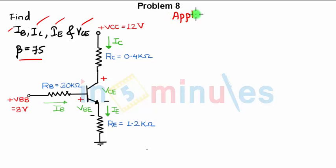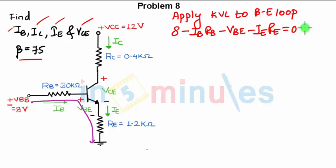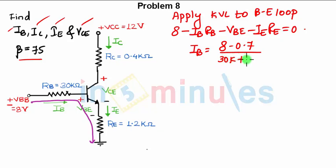Apply KVL to the base-emitter loop. The base-emitter loop starts from this point and ends over here. The KVL equation is: 8 minus IB×RB minus VBE minus IE×RE equals 0. Using the shortcut method: IB = (8 − 0.7) / (RB + (1 + beta)×RE) = (8 − 0.7) / (30k + (1 + 75)×1.2k). IB comes out to approximately 60.23 microamperes.